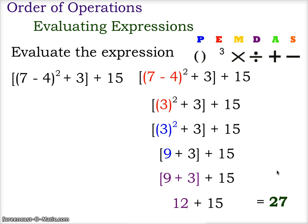So again, because we have grouping symbols inside of grouping symbols, we start with the innermost grouping symbols — 7 minus 4 first. Since we're working inside the brackets, we then do the exponent, 3 squared, which gave us 9. Then we do 9 plus 3, giving us 12, and finally add the 15, giving us 27.